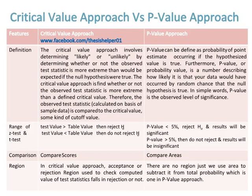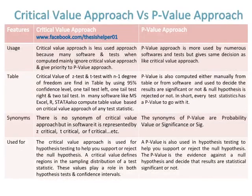The critical value approach compares scores while the p-value approach compares areas. In the critical value approach, an acceptance or rejection region is used to check whether the computed value of the test statistic falls in the rejection region or not. In the p-value approach, there is no region — we use area and subtract it from the total probability of one. The critical value approach is less used because many software packages ignore it and give priority to the p-value approach.